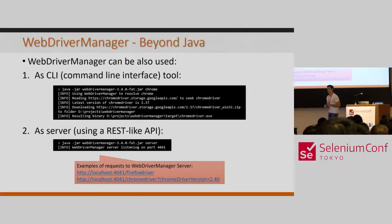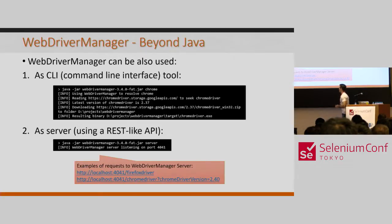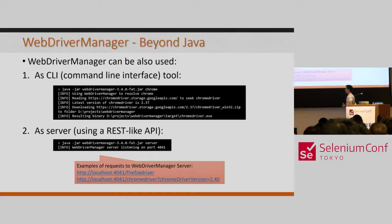WebDriverManager can be used in two additional ways beyond Java. First, as a command-line interface tool — it can be run from the shell. When I release a new version, I create a fat JAR — WebDriverManager with all its dependencies in a single file. This JAR can be executed from the shell using Java -jar webdrivermanager..., and we can resolve drivers using the command line. This can be useful for scripts or Jenkins configuration setups, to resolve the required drivers outside of a Java program.